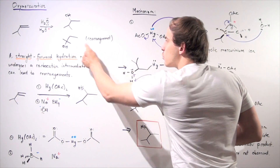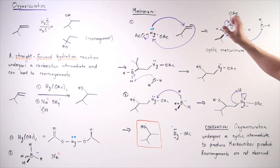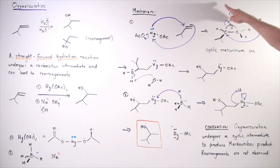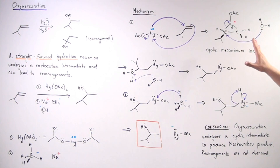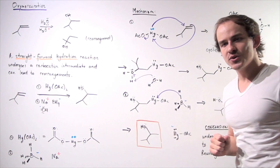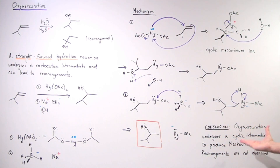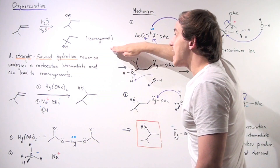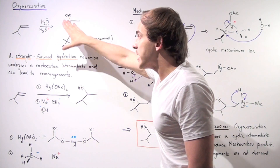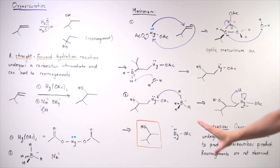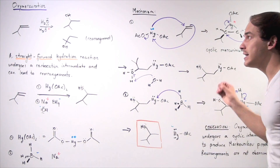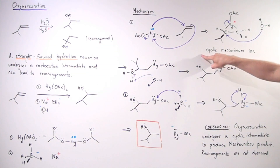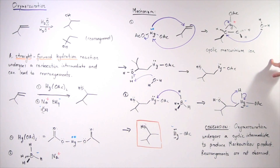Notice that no rearrangements take place because the oxymercuration reaction proceeds through a cyclic intermediate rather than a carbocation intermediate. The rearranged product does not form, as it does in straightforward hydration, because we no longer have a free carbocation intermediate. Instead, we have the cyclic mercurinium ion, which does not allow any rearranged products to form.